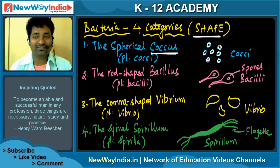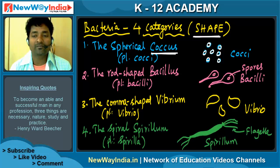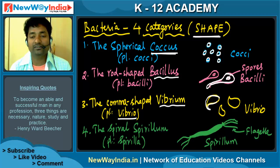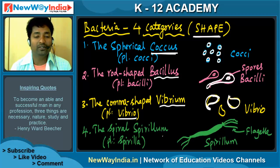The rod-shaped bacteria are called Bacillus, plural Bacilli. They are shaped like a rod, and the center part can contain spores. The comma-shaped bacteria are called Vibrium, plural Vibrio. They are shaped like a comma.